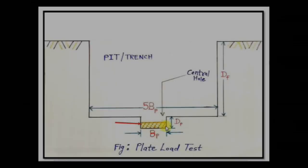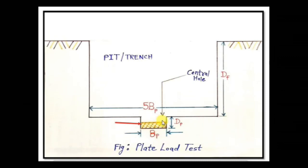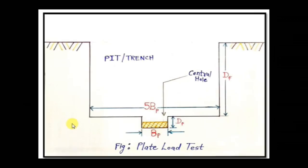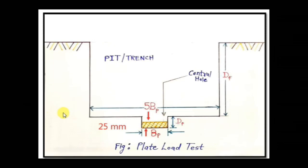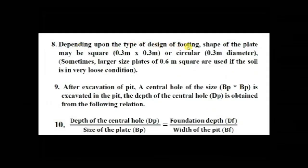The plate used is made up of mild steel, which acts like a footing. It should be placed on a surface whose bearing capacity is to be determined. The plate size may vary in width from 300 mm to 750 mm — that is 30 cm, 45 cm, 60 cm, 90 cm — and the thickness of the plate is 25 mm. If the thickness is less than 25 mm, it will bend upon application of load. Depending upon the type of design of footing, the shape of the plate may be square of 0.3 m × 0.3 m or circular of 0.3 m diameter. Sometimes a larger size plate of 0.6 m square is used if the soil is in very loose condition.